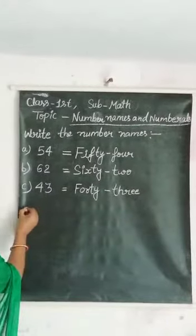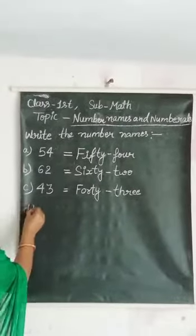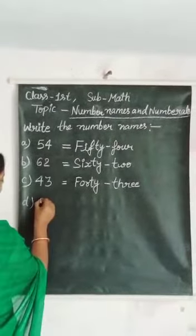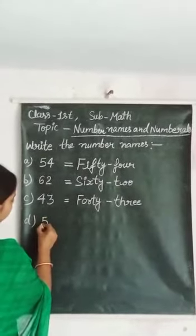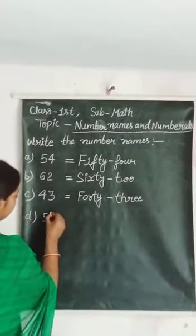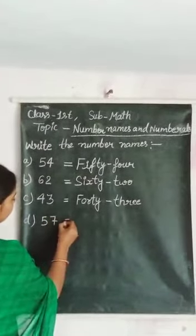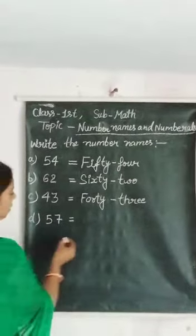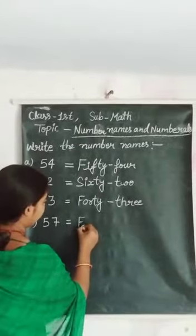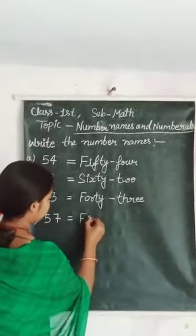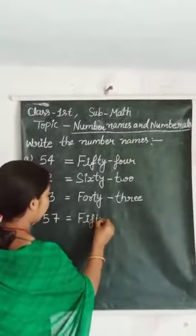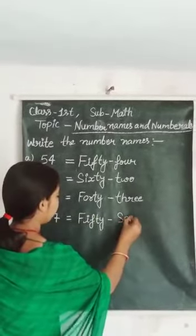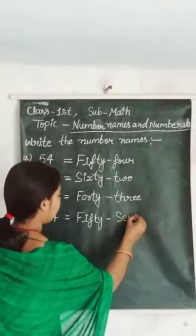Numeral is 57. Number name is FIFTY-SEVEN.